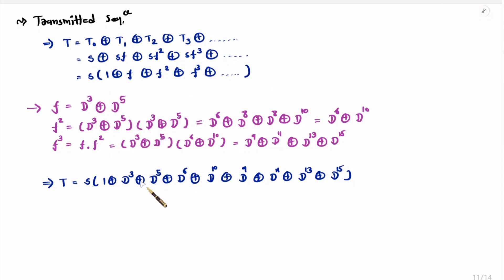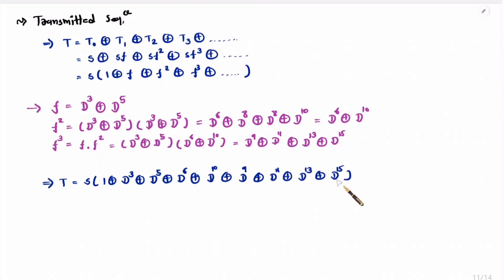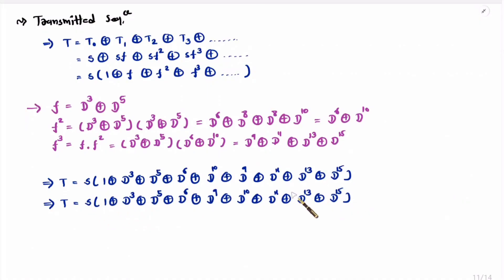Now let me write the transmitted sequence substituting the values. f = d³ + d⁵, f² = d⁶ + d¹⁰, and f³ = d⁹ + d¹¹ + d¹³ + d¹⁵. Rearranging all useful terms in order: 1 XOR d³ XOR d⁵ XOR d⁶ XOR d⁹ XOR d¹¹ and so on. Terms beyond d⁹ are not useful for the 9-bit sequence.